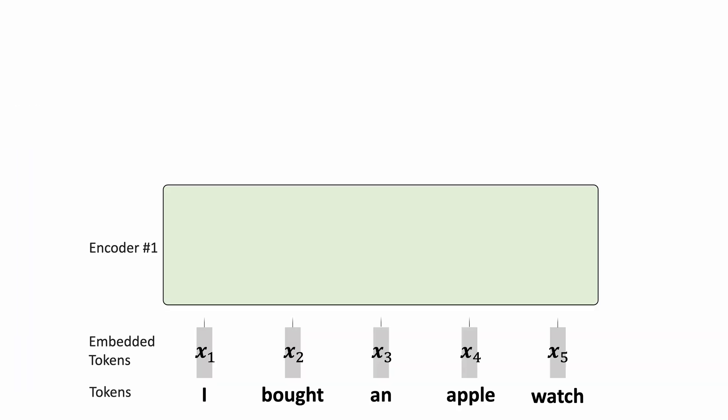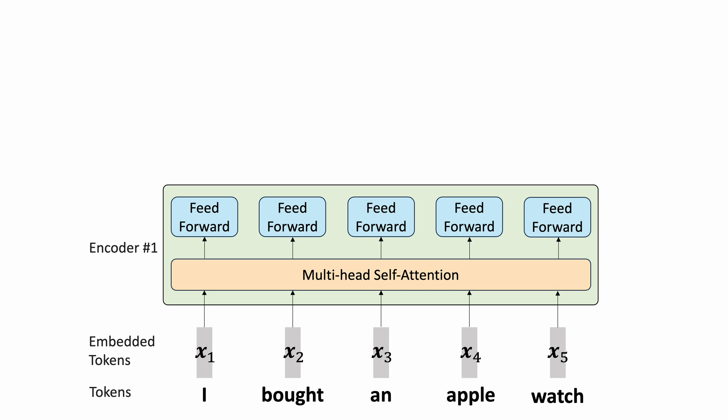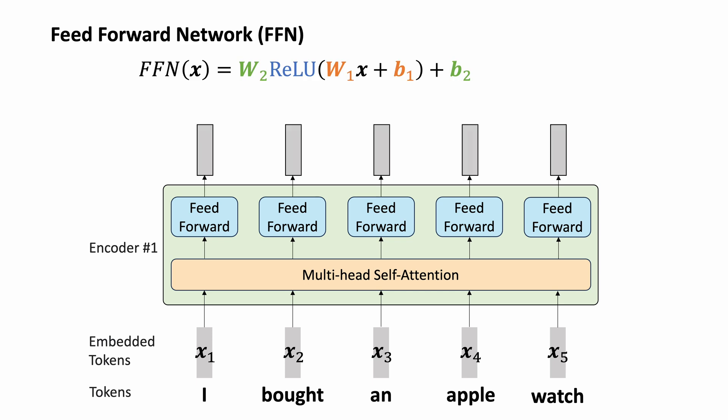Great, we now have an effective method for extracting contextual information from the input sequence. Next, we use a feed-forward model to further extract more complex features. The feed-forward model is just a simple two-layered MLP that processes the feature at each position independently.